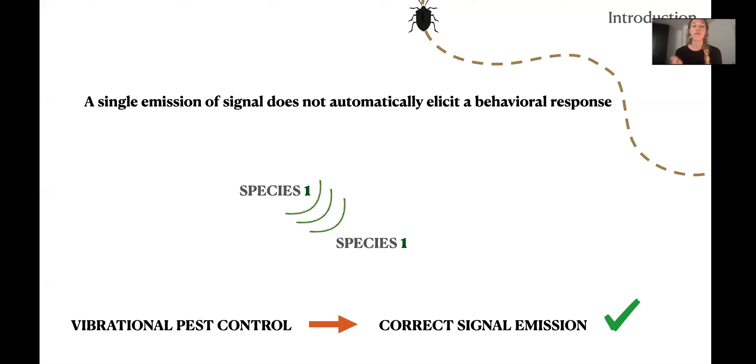In this sense, we could also benefit from understanding call parameters which elicit more searching. Once we know that the individuals search for a specific signal, if we study each of the parameters inside this signal, we could create an optimal signal to use in playbacks, which could attract more individuals to a trap.